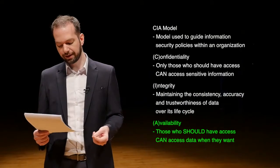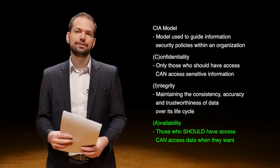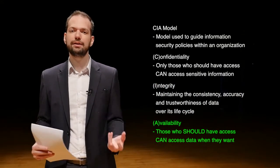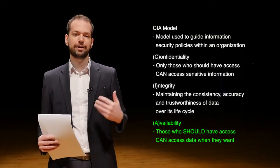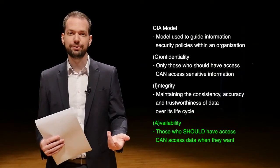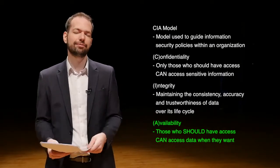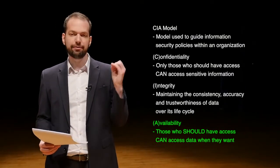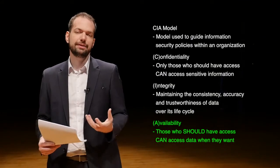And Availability — those who should have access can access data whenever they want. The most well-known way availability is attacked is through denial of service attacks, which bring a website down so authorized users can't access it. Confidentiality, integrity, availability: information security tries to maintain all three, though all three require balance and you should be thinking about all of them when securing data.